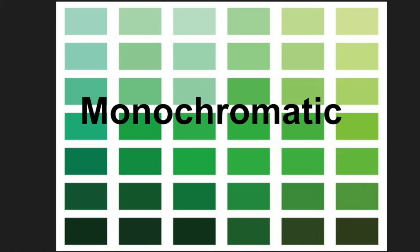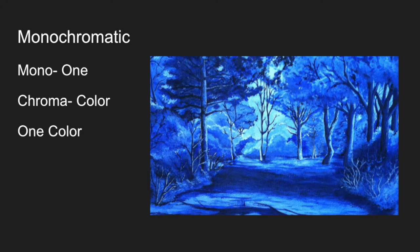Welcome back, art classes. Today we're going to be talking about monochromatic color schemes. If you haven't heard this word already, let's break it down. Mono means one, and chroma means color. So monochromatic is one color.